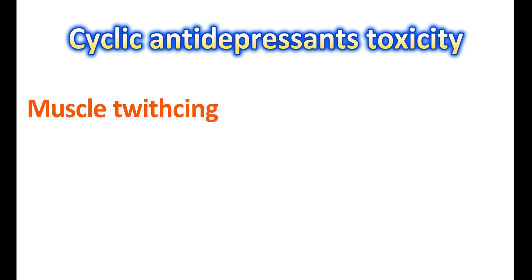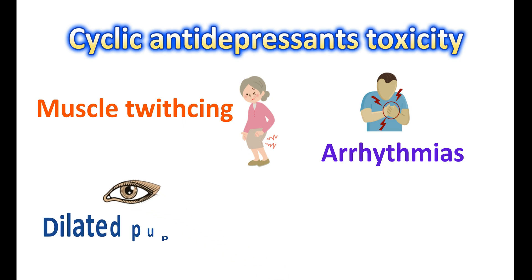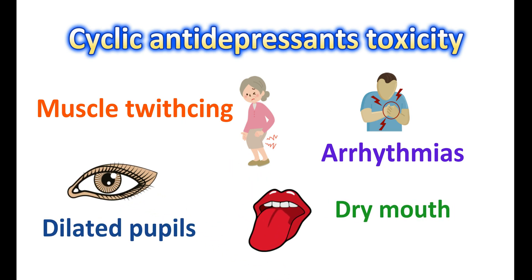Any symptoms like muscle twitching, tremors, cardiac arrhythmias, dilated pupils, dry mouth, and reduced peristalsis may indicate the toxicity of cyclic antidepressants. In the presence of these symptoms, Flumazenil can increase the risk of seizures, and in such people it should not be used.